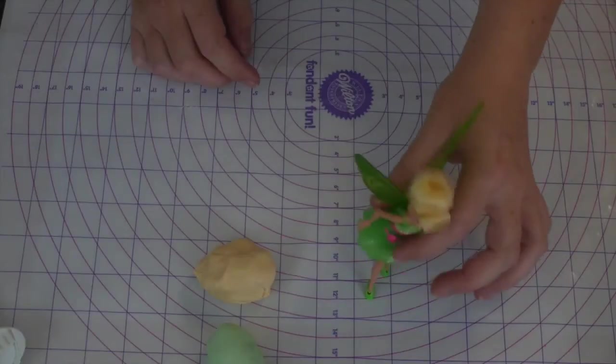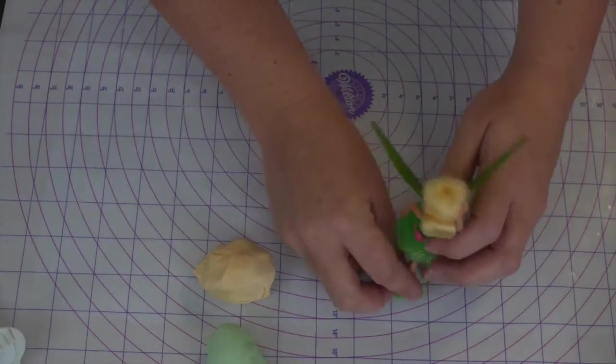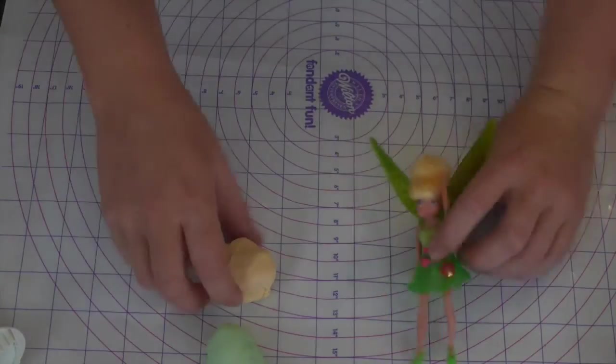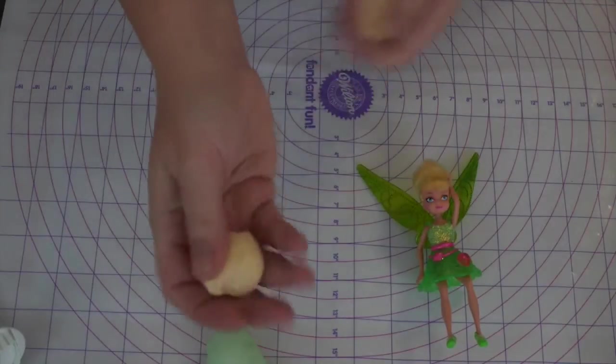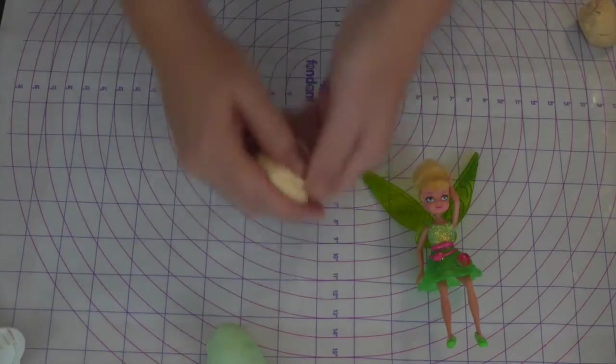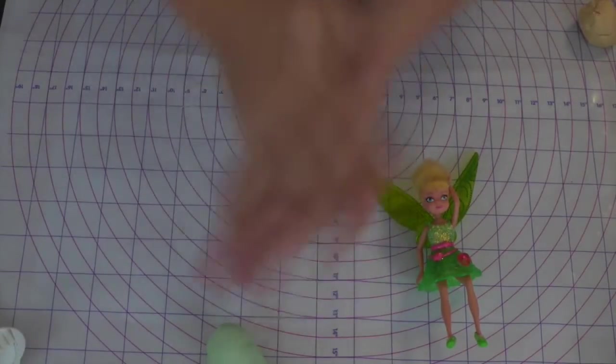Now my Tinkerbell doll does not stand up on her own. As you can see she has bent legs, so I am going to make her a little toadstool to sit on on the outside of her house. Starting with a little bit of ivory fondant, I am simply going to roll that into a ball. And then using my fingers I am going to shape it into just a little sort of oval shape.